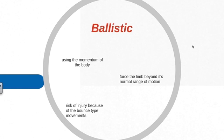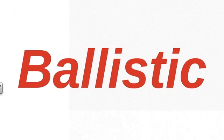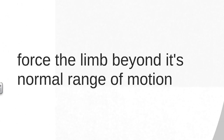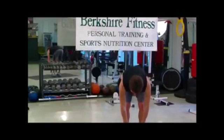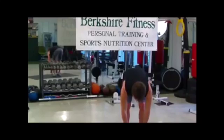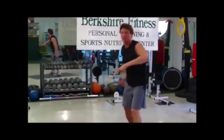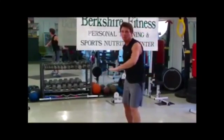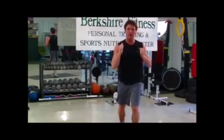The next type of stretching is ballistic stretching. Ballistic stretching uses the momentum of a moving body in a bouncing fashion, attempting to move the limb beyond its normal range of motion by bouncing in and out of a stretched position. It is considered a controversial type of stretching because of the potential risk of injury due to the bouncy movements, as you can see in this example.